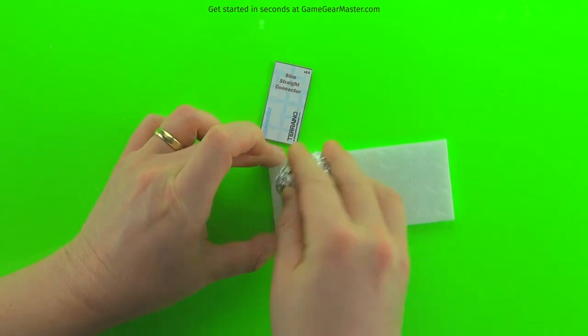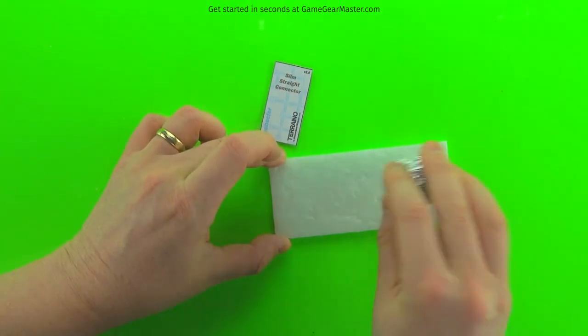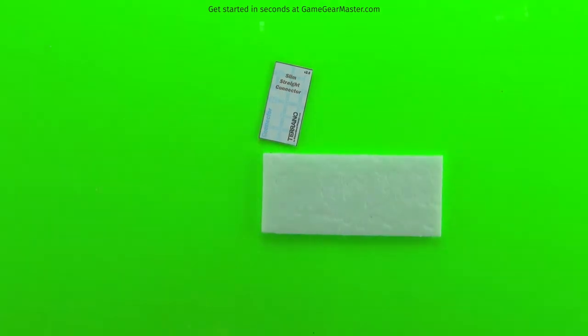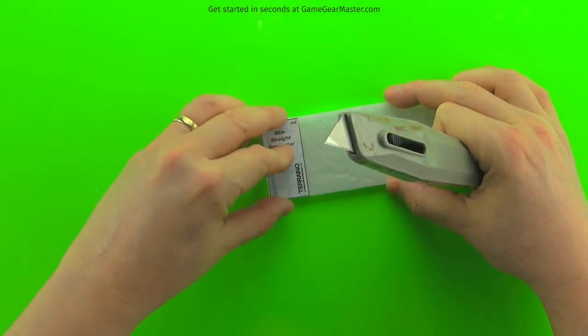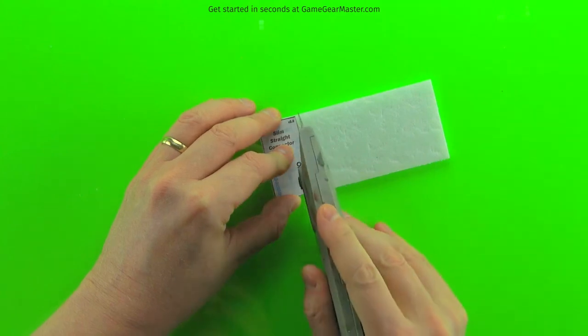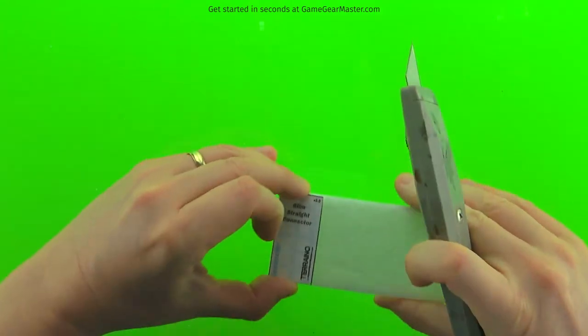For the straight slim connector, we're going to have to texture the backside of the foam as well as the front side since you're going to see both sides. And yes, the slim straight connector is literally just one piece of foam. Just like that.